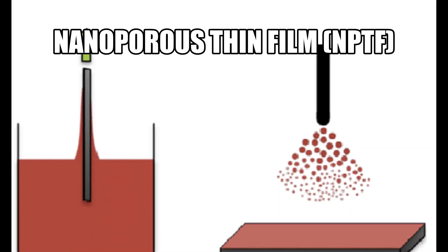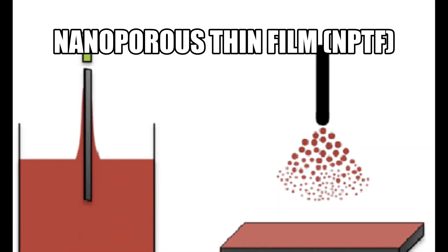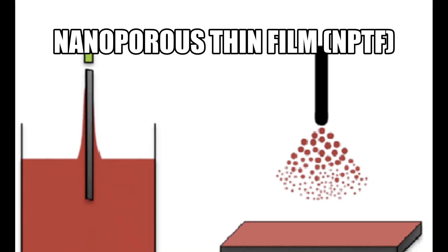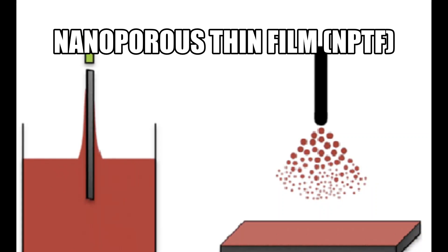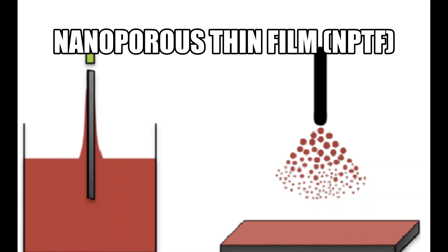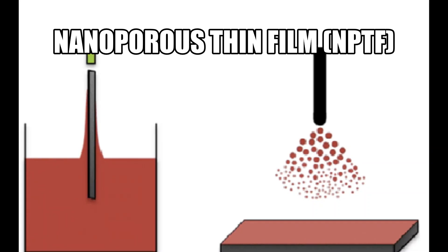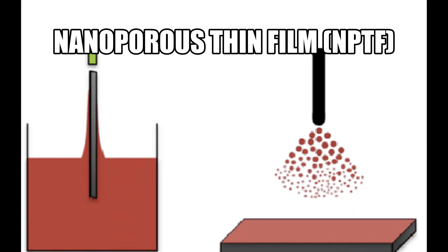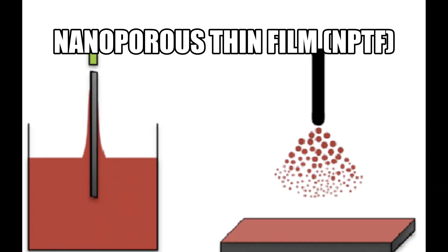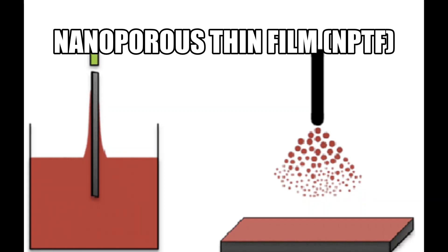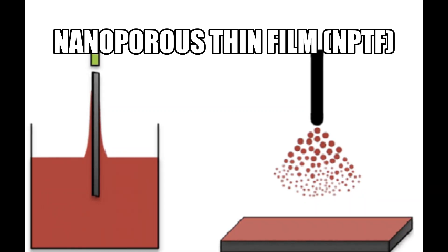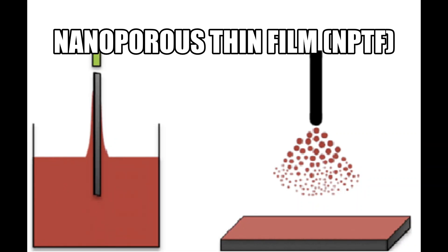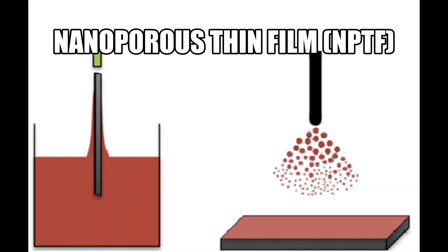Researchers have developed many ways to modify cement properties through nanomodification. Nanoporous thin film coating is a technology used on aggregates. It uses water-suspended nanoparticles to coat aggregates through dip or spray coating methods. This is a cost-effective method, as a small quantity of nanoparticle additives is needed to obtain significant results, as opposed to conventional addition methods.